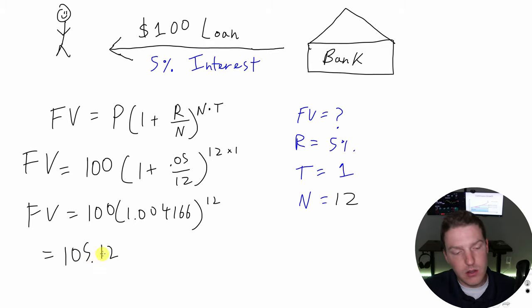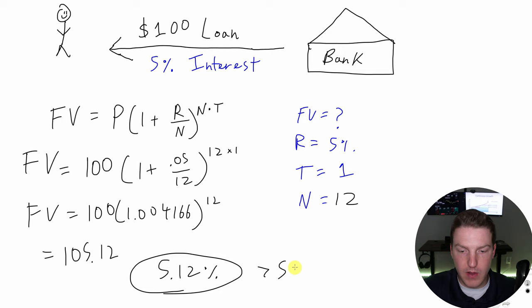If we divide the 105.12 by 100 and subtract one, we find that the effective annual rate of interest is now actually 5.12%, which is greater than the original 5% when we only had one compounding period, because we're earning interest on interest.